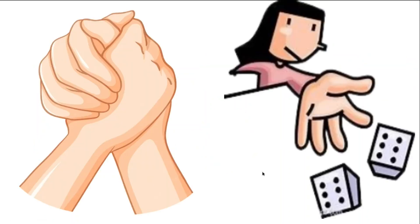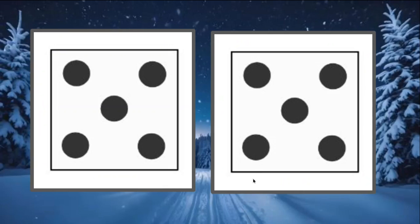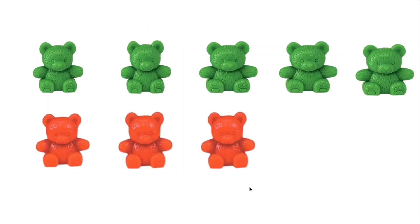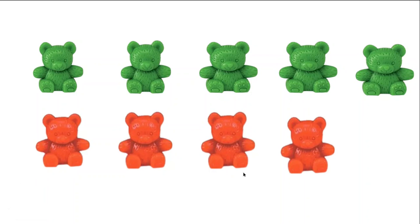Get ready. Shake, shake, shake. How many dots are on my dice now? Yes, ten. How can I make eight equal to ten? What do I need to do? Did you say add more bears? Well, you're correct. I have eight bears — five, six, seven, eight — and I need to add more bears to make ten. Eight, nine, ten.